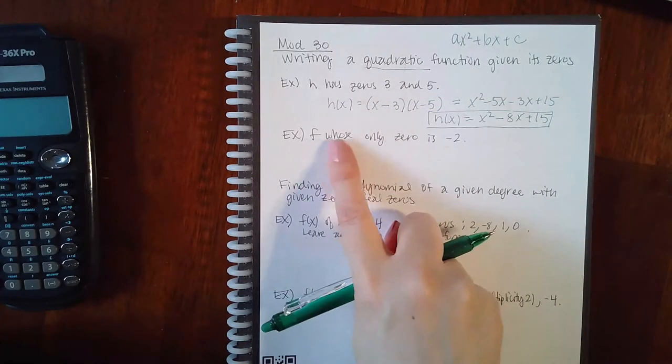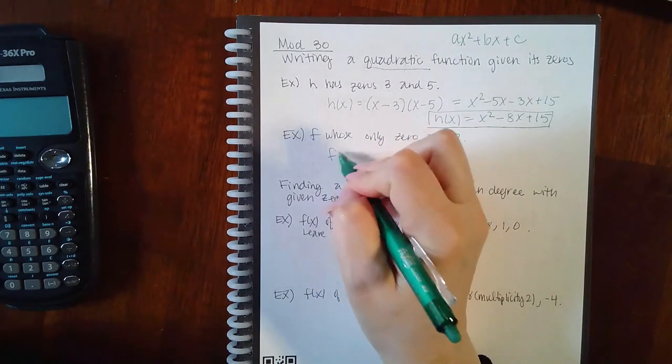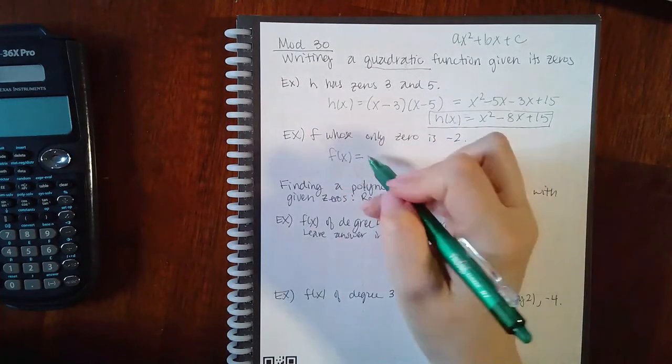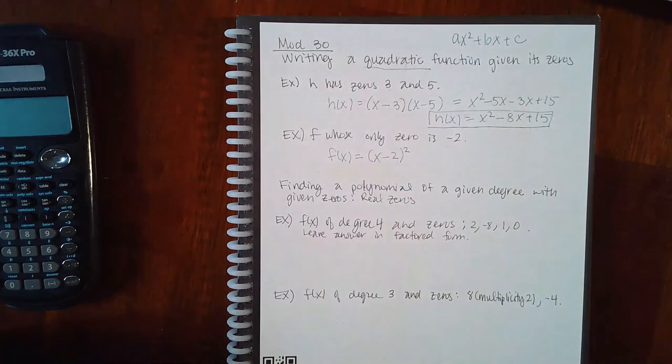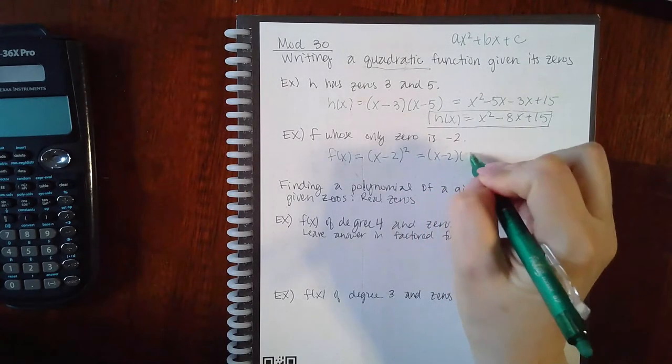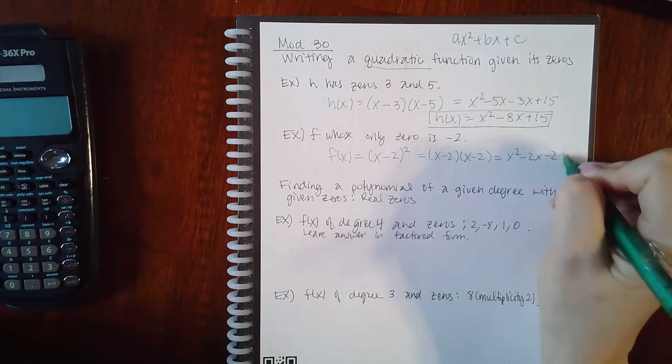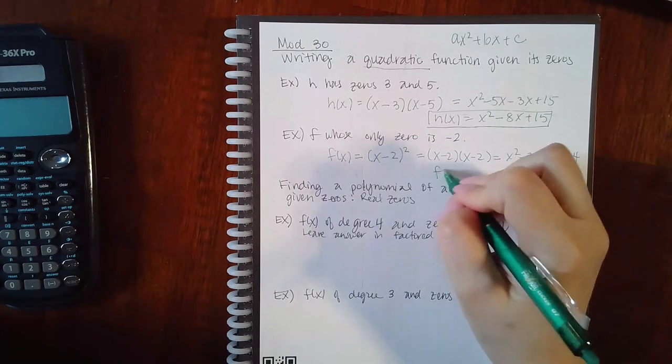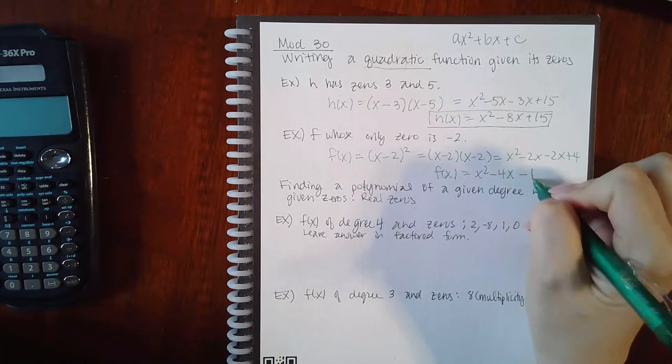Here it says f whose only zero is negative 2. But remember we said we had to have at least two zeros. What if you put a square? Then that covers the two factors that you need. If I expand that out, we get f of x equals x squared minus 4x plus 4.